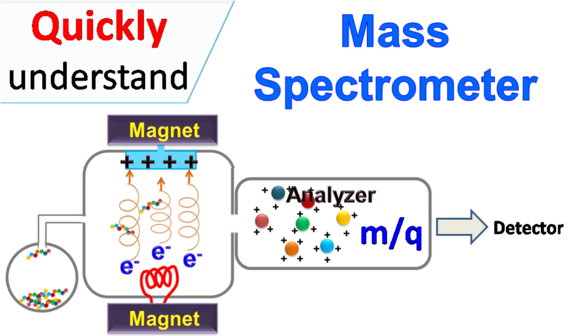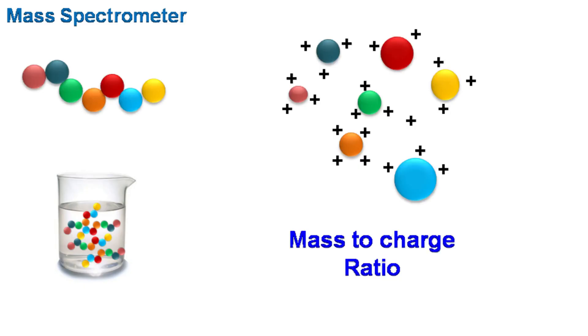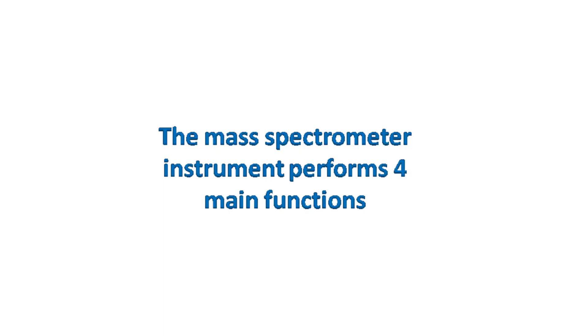Hey guys, quick biochemistry basics here. Let's talk about mass spectrometry, the analytical technique in which molecules are converted into ions which are separated based on their mass to charge ratio.